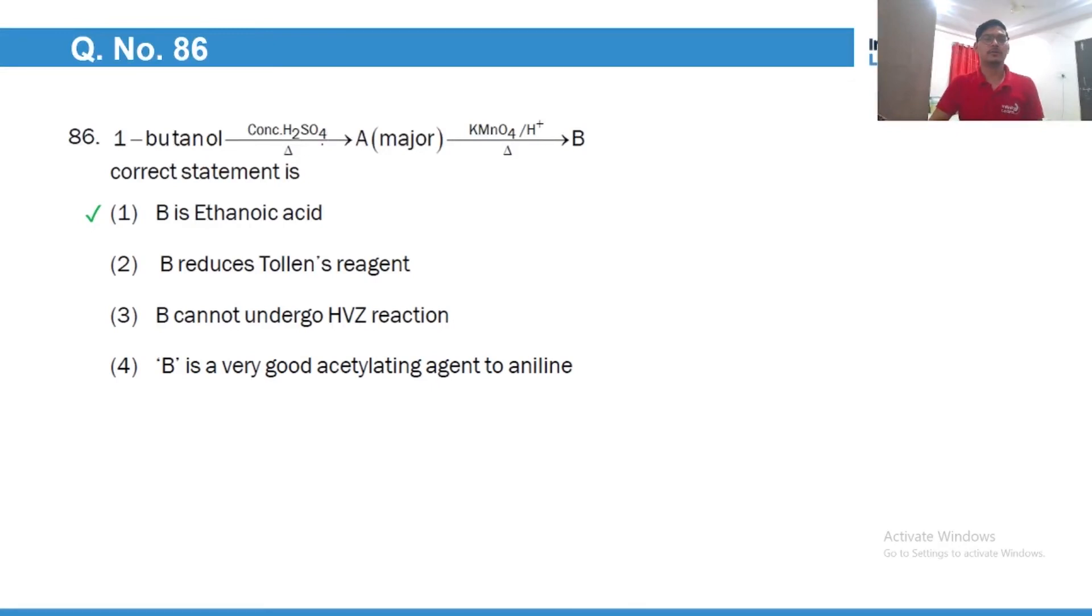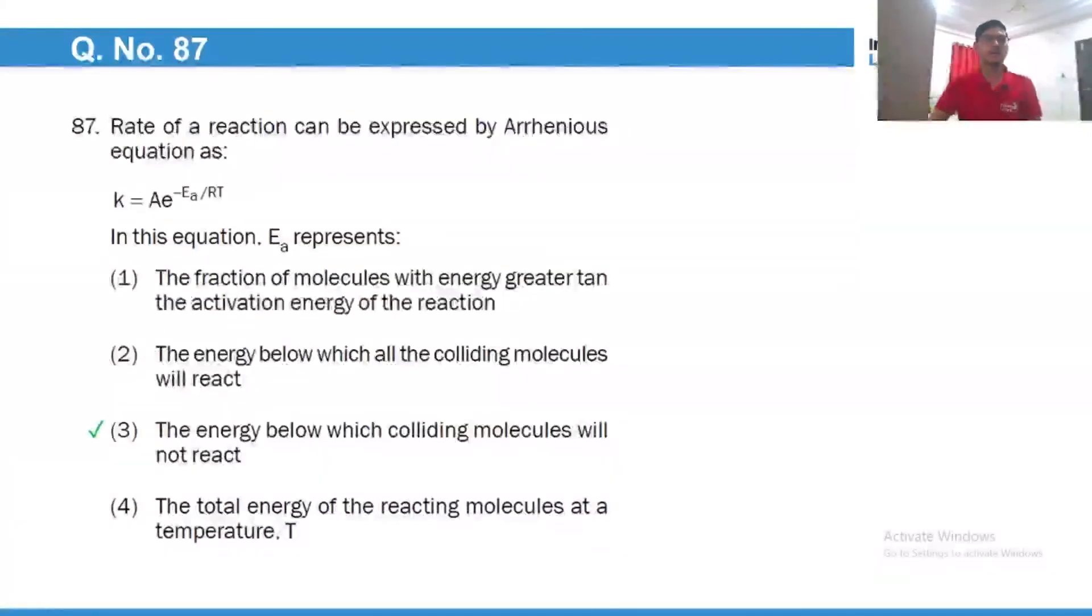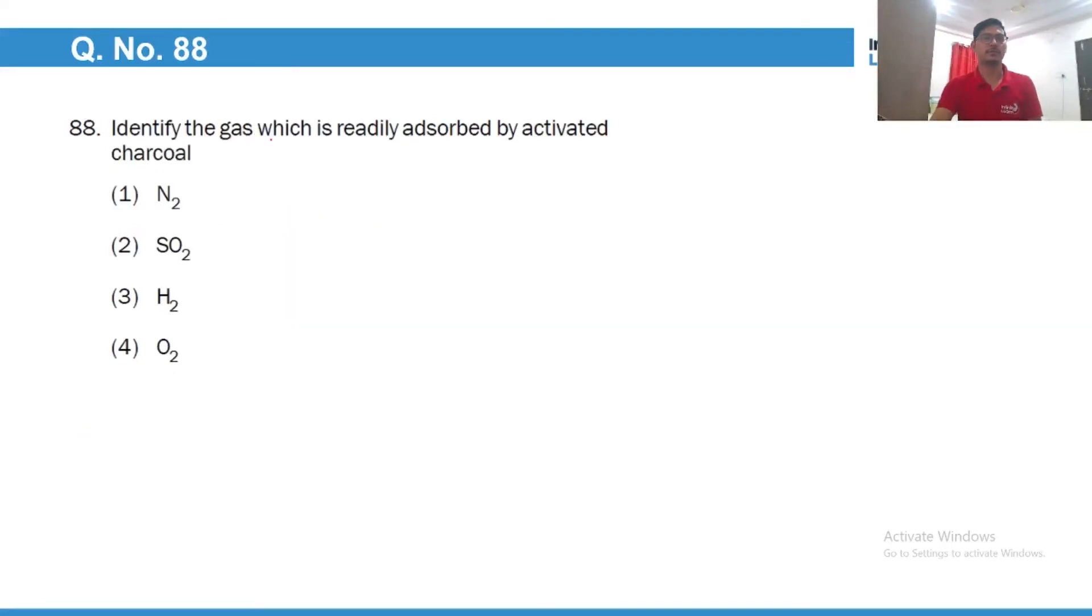One butanol on reaction with concentrated H2SO4 will give butene. Actually the less stable one butyl carbocation will rearrange to more stable carbocation and we will get then butene. And now if you react it with acidic KMnO4, of course it will give you two equivalents of ethanoic acid. This will be possessed by the molecules for a successful collision. The gas which has highest attractive forces, strongest attractive forces will be most easily adsorbed, so sulfur dioxide.